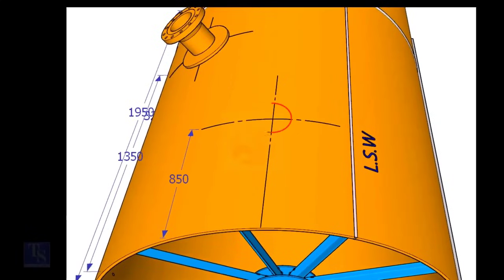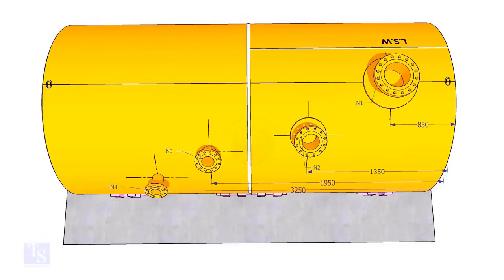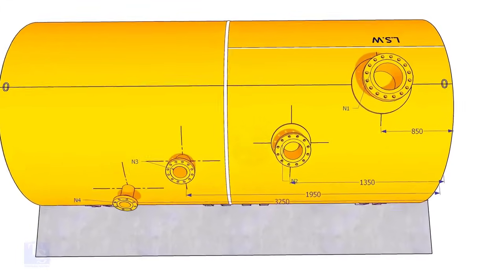This is the center of nozzle N1. Extend the N1 center line up to the other end of the shell and mark it as zero degrees.